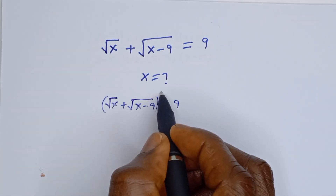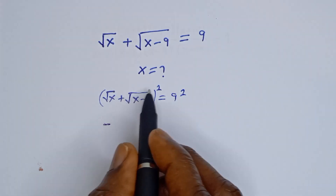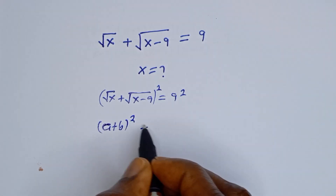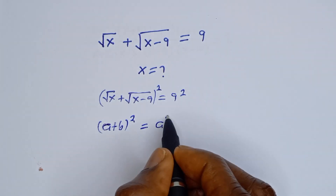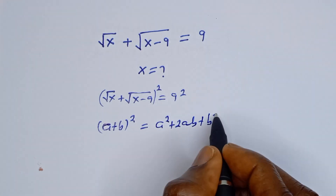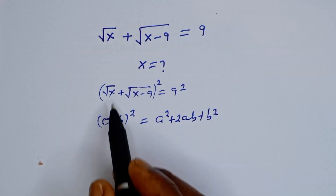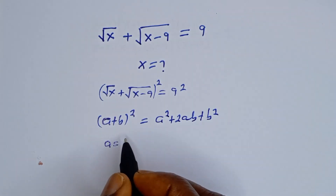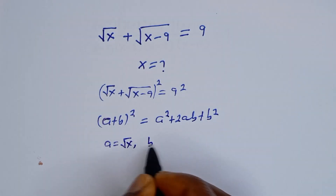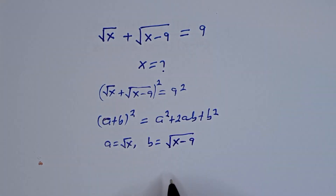Let's square both sides of this equation. Take note that if you have a plus b squared, this is equal to a squared plus 2ab plus b squared. From this equation, a is equal to square root of s and b is equal to square root of s minus 9.